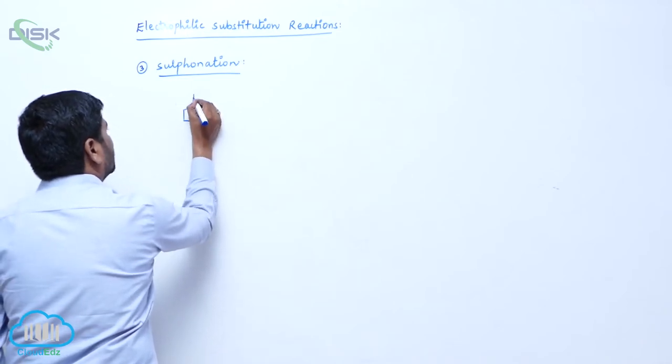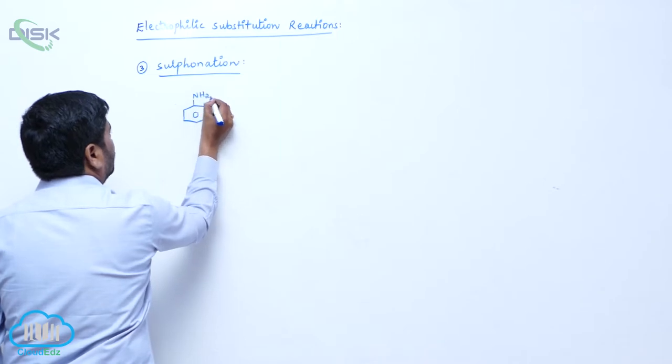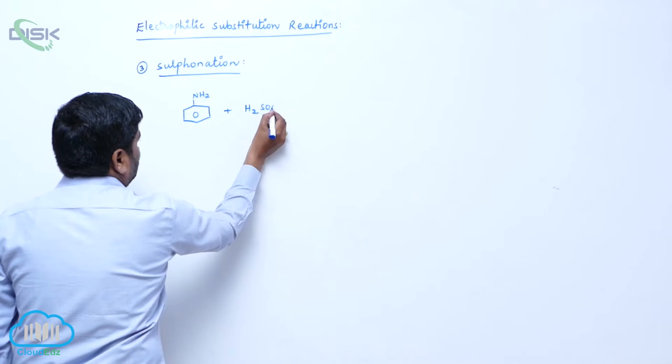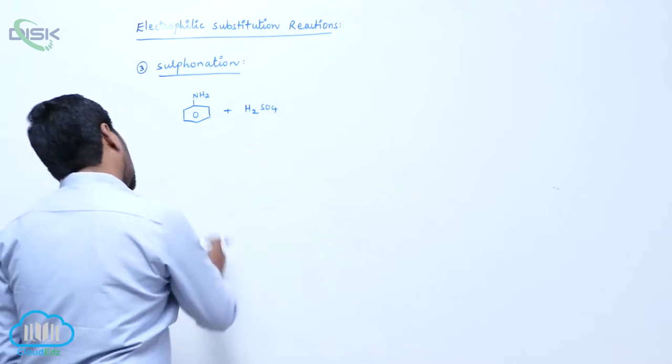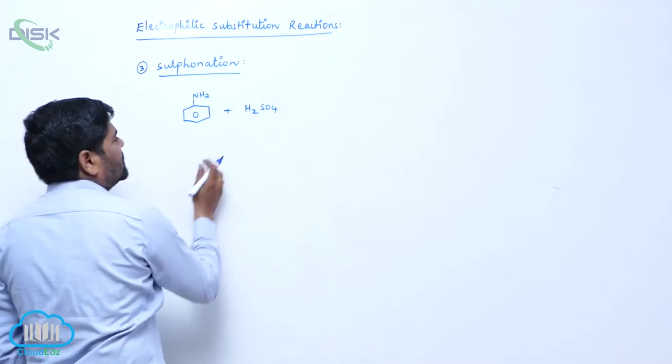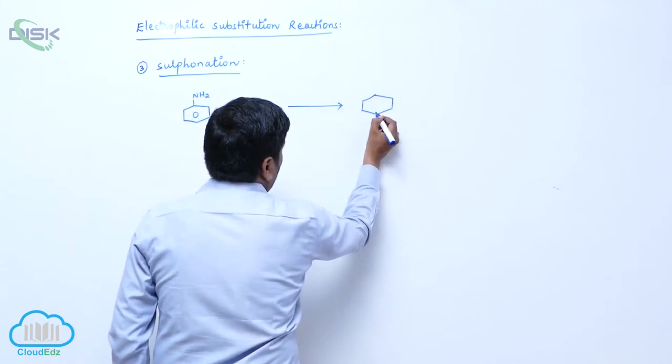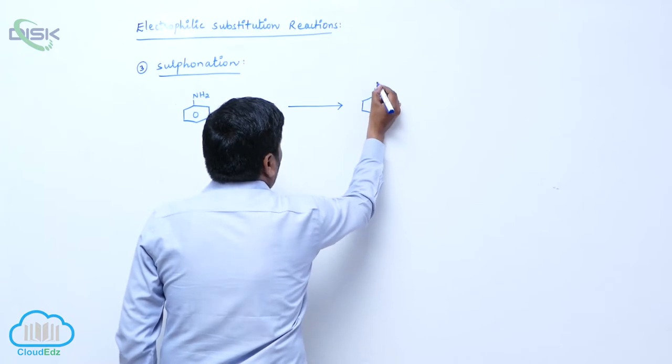Aniline reacts with, because it is an acid, aniline is a base, it reacts with an acid. So initially it forms anilinium bisulphate.